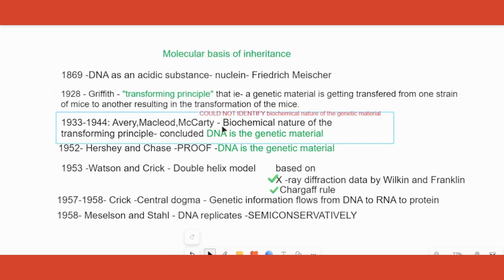Griffith, Avery, McLeod, McCarty, then Hershey and Chase's experiment, all leading up to understanding the structure of the DNA. So today we will in depth understand the double helix model which was proposed by Watson and Crick in 1953